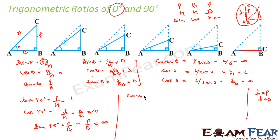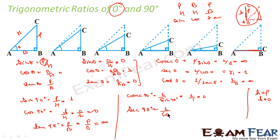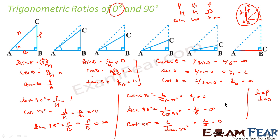Cosec 90 degree is nothing but 1 by sin 90 degree, so this comes out to be 1 by 1, that is 1. Similarly, sec 90 degree is nothing but 1 by cos 90 degree, that is 1 by 0, which is undefined. And cot 90 degree is equal to 1 by tan 90 degree, that is 1 by undefined, which is 0. So we have got the values of all trigonometric ratios for 0 and 90.